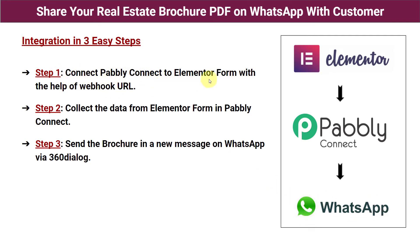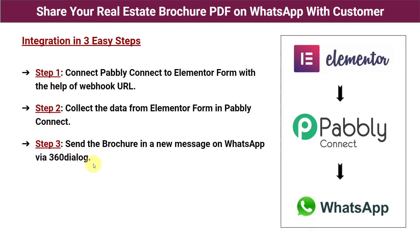Step one: connect Pabbly Connect to Elementor Forms with the help of a webhook URL. Step two: collect the data from Elementor Forms in Pabbly Connect — we will deliver the response from Elementor Forms to Pabbly Connect. Step three: send the brochure in a new message on WhatsApp via 360 Dialog — we will deliver the brochure according to the details received in Pabbly Connect to the customer's WhatsApp account. I'll explain what 360 Dialog is later. First, let's jump to step one and open Pabbly Connect.